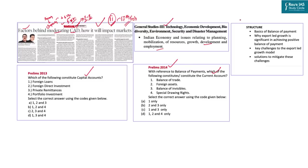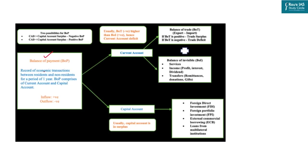The balance of payments is a record of economic transactions between residents and non-residents over a period of one year — covering all transactions occurring inside India as well as those from abroad in which India participates. The BOP comprises the current account and the capital account. The current account includes the balance of trade (difference between exports and imports) and the balance of invisibles — international transactions that do not involve an exchange of tangible goods, such as services, profits, interest, dividends, remittances, and donations.